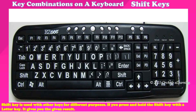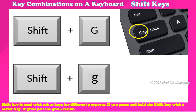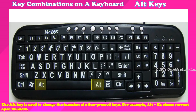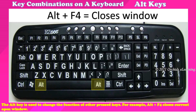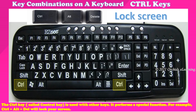Now let us learn about key combinations on a keyboard. The Shift key is used with other keys for different purposes. For example, if you press and hold the Shift key with 'G' when Caps Lock is off, it types a capital G; if Caps Lock is on and you press Shift with 'g', it types a small g. The Alt key is used to change the function of other pressed keys — for example, Alt + F4 closes the current open window. The Control key is used with other keys to perform a special function — for example, Ctrl + Alt + Delete will lock your screen.